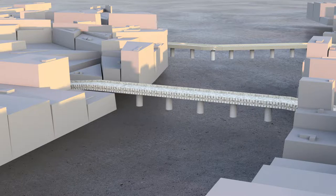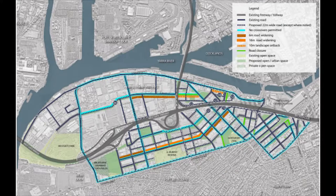In October 2017, Transport for Victoria came up with the Fisherman's Bend Integrated Transport Plan, which covers cycling corridors, bus service, light rail routes, new streets, and so on. And today we're going to focus on the cycling corridors.